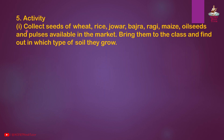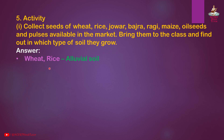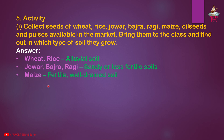Section 5 Activity. First, collect seeds of wheat, rice, jowar, bajra, ragi, maize, oilseeds, and pulses available in the market and bring them to class to find out in which type of soil they grow. Answer: Wheat and rice grow in alluvial soil; jowar, bajra, and ragi grow in sandy or less fertile soils; maize grows in fertile, well-drained soil; oilseeds and pulses grow in loamy or black soils.